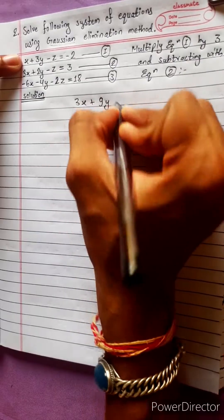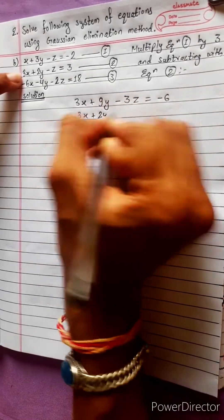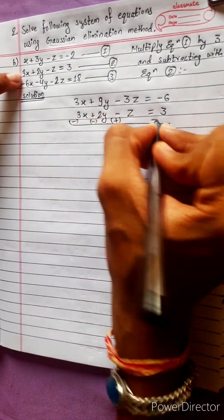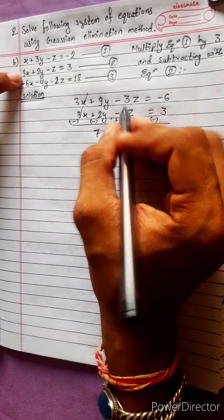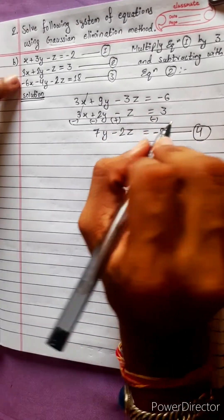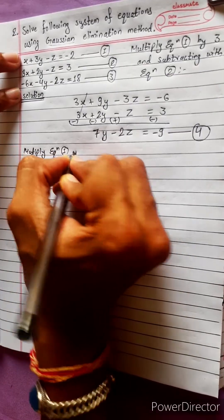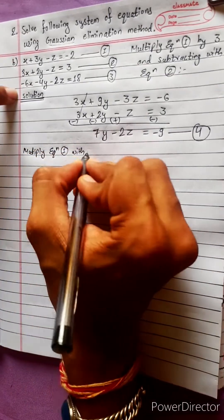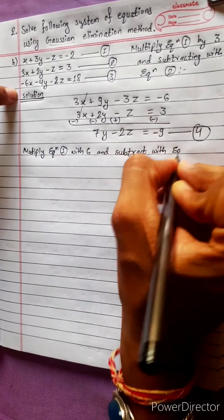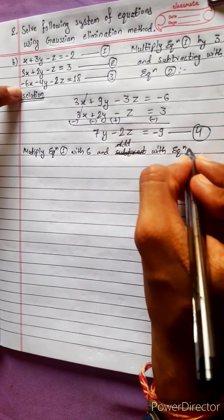3x plus 9y minus 3z equals 3, subtracting with equation 2: 3x plus 2y minus z equals 3. After subtraction, 3x cancels, giving 7y minus 2z equals negative 9. This is equation 4. Now multiply equation 1 by 6 and add with equation 3 to get equation 5.